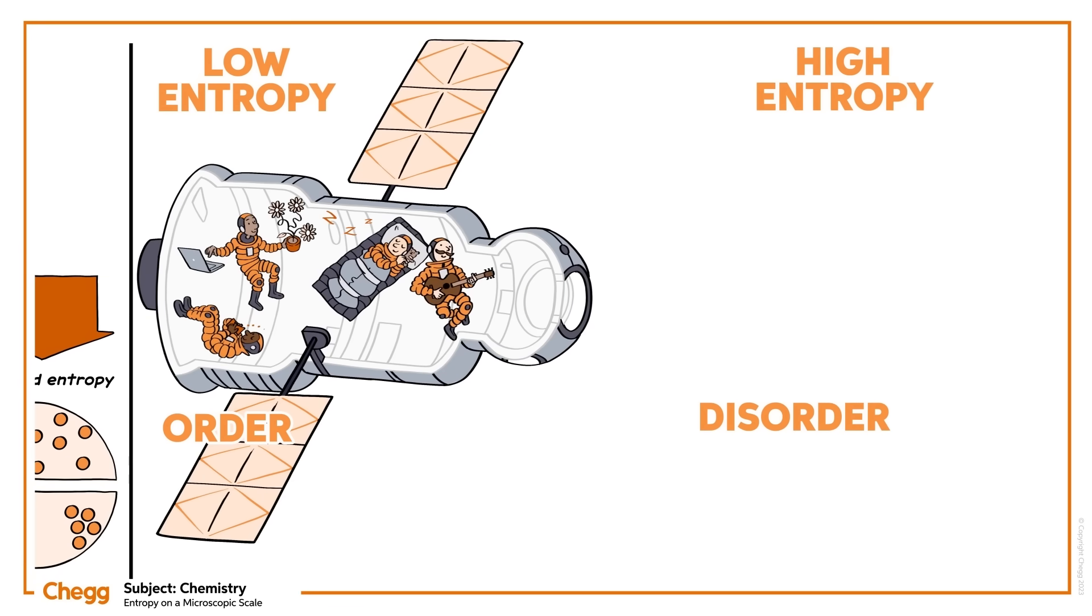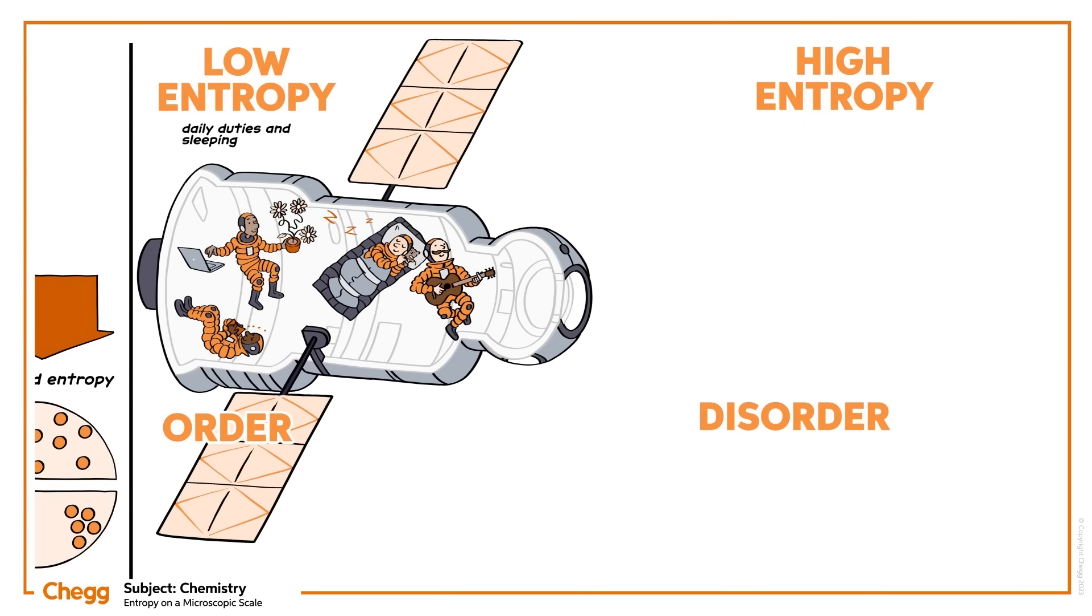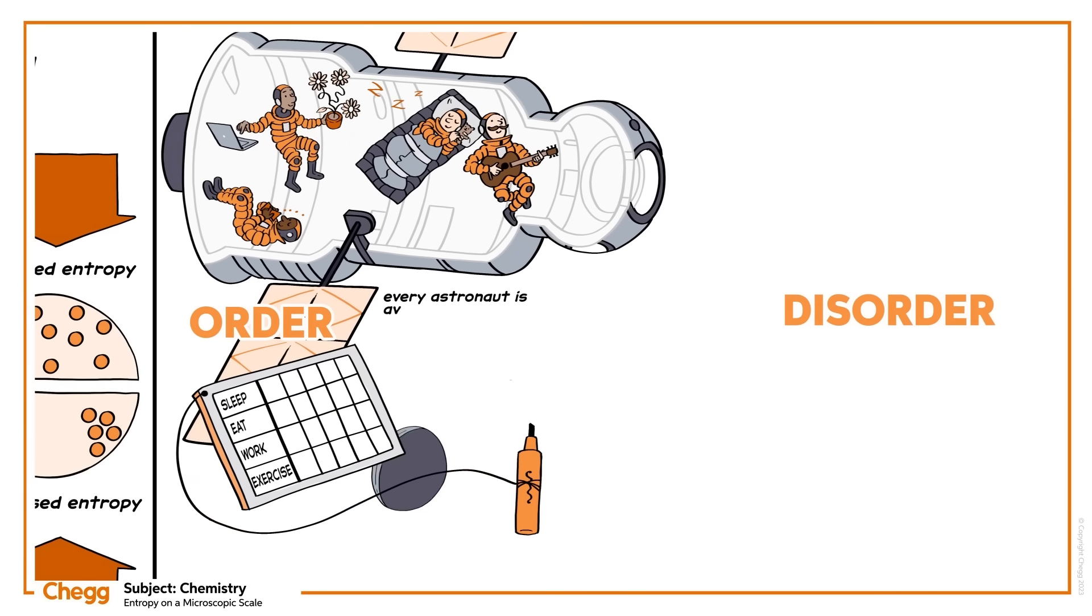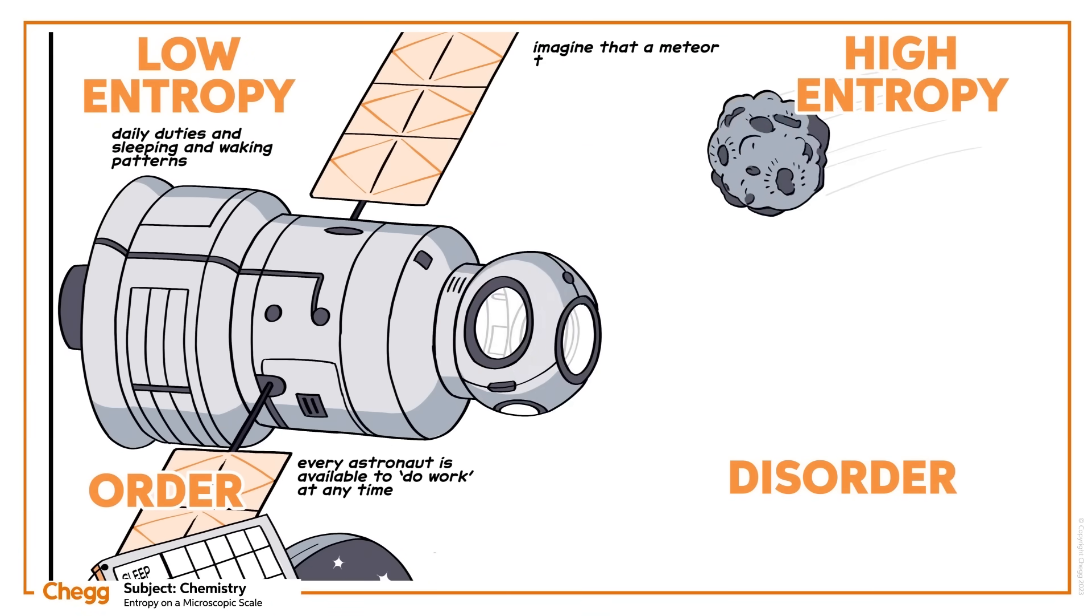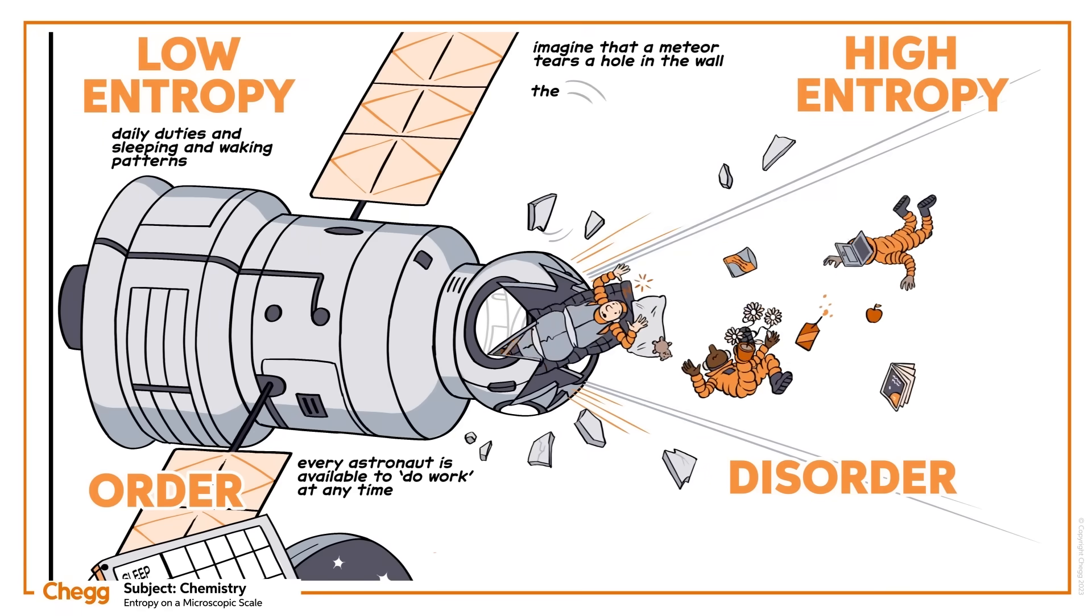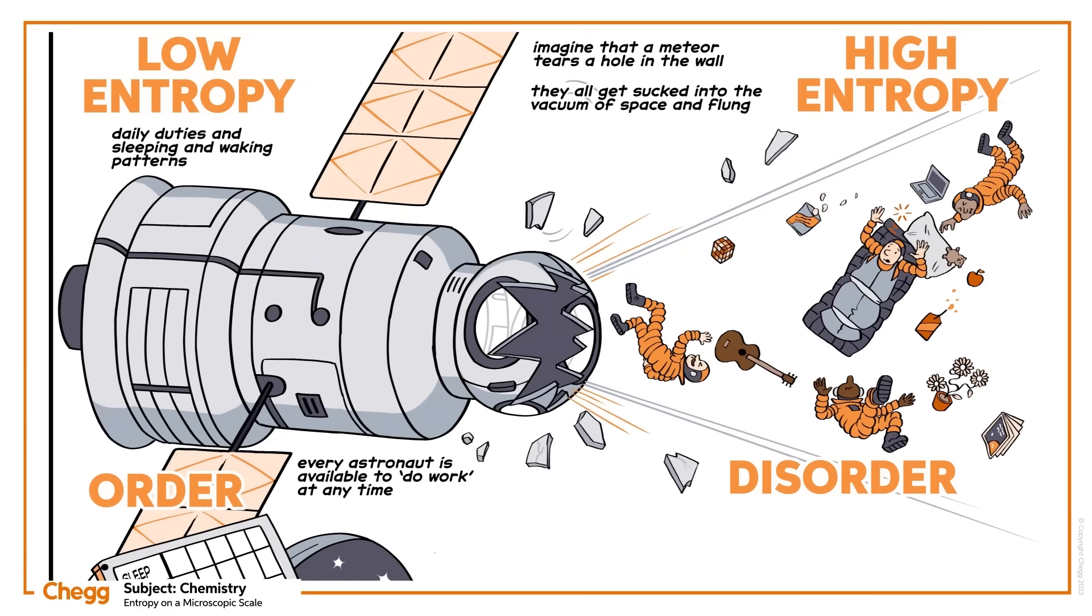Imagine a group of astronauts all inside a spaceship. They each have certain daily duties as well as sleeping and waking patterns. These are so neatly ordered within the system of the spaceship that every astronaut is available to do work at any time. This is a low entropy system because it's very ordered and has a lot of potential energy. Now imagine that a meteor tears a hole in the wall and they all get sucked into the vacuum of space and flung far apart from each other. In this state of disorder, in this huge system, they're unlikely to be able to do any work.